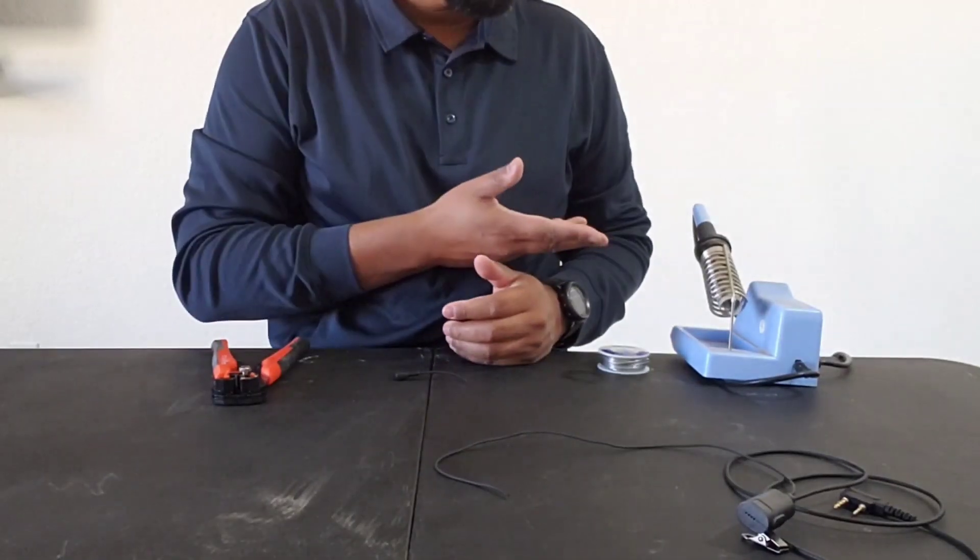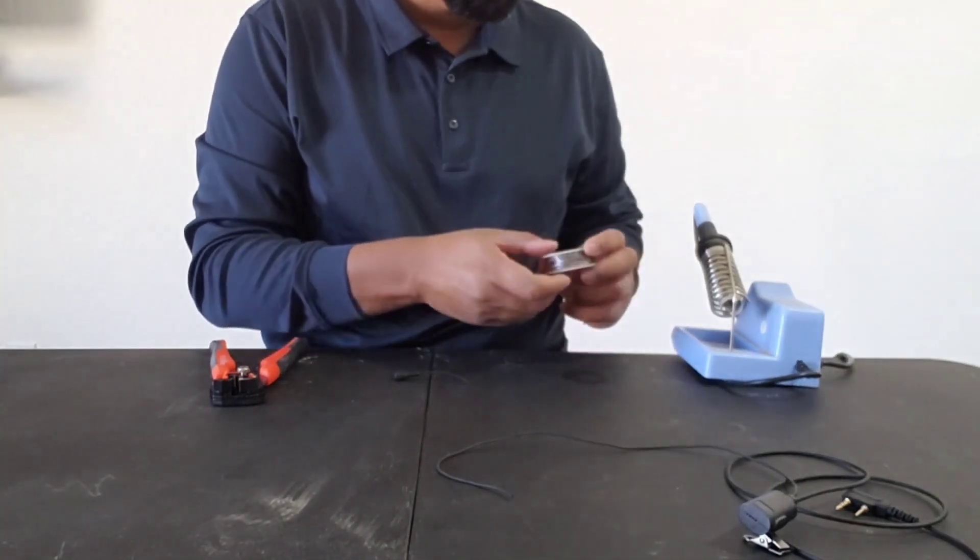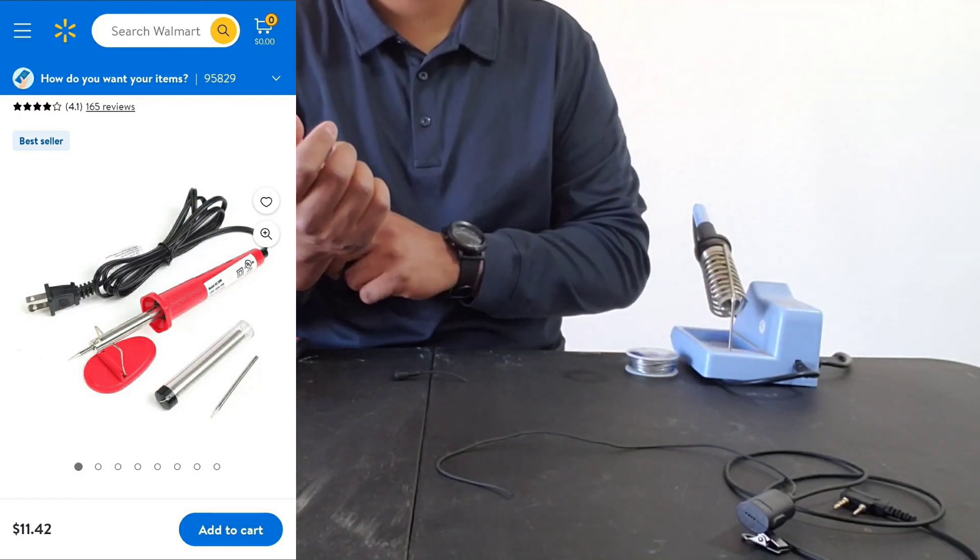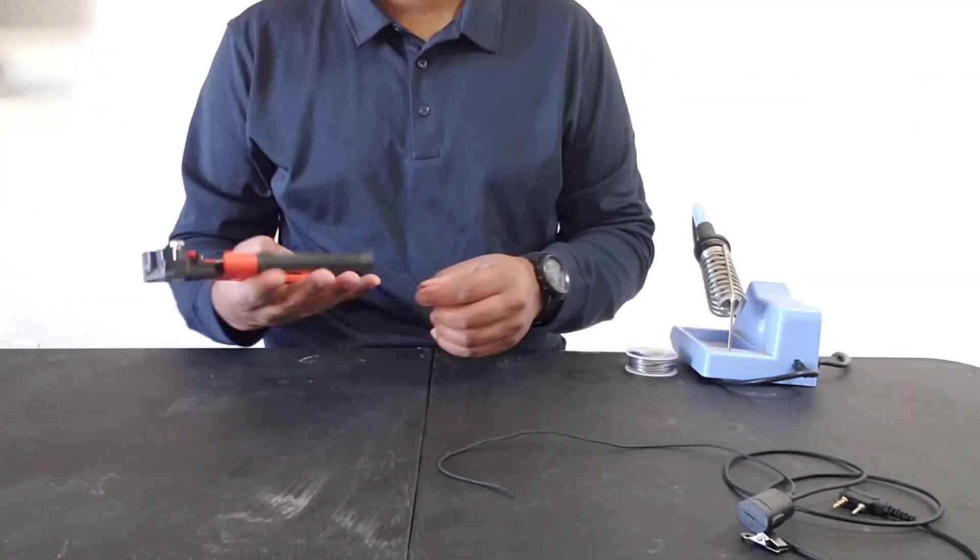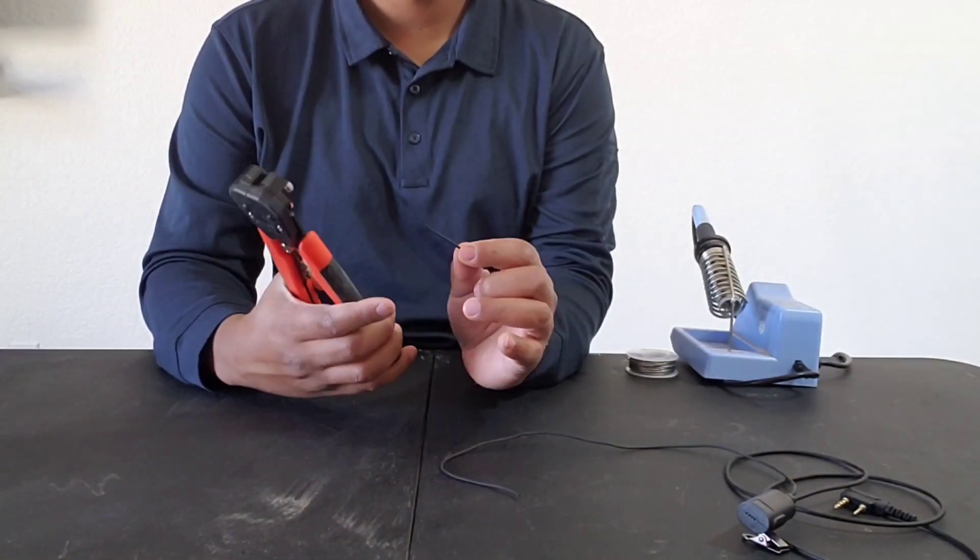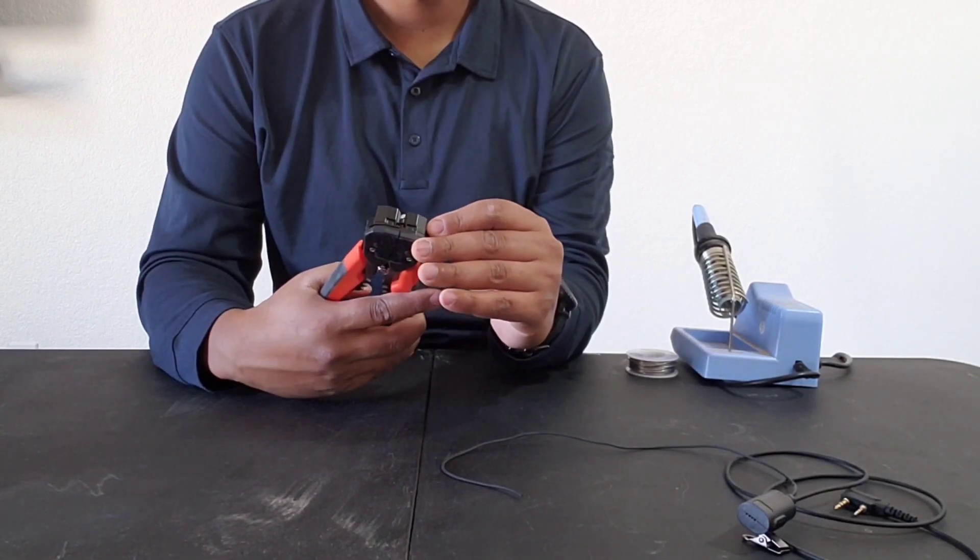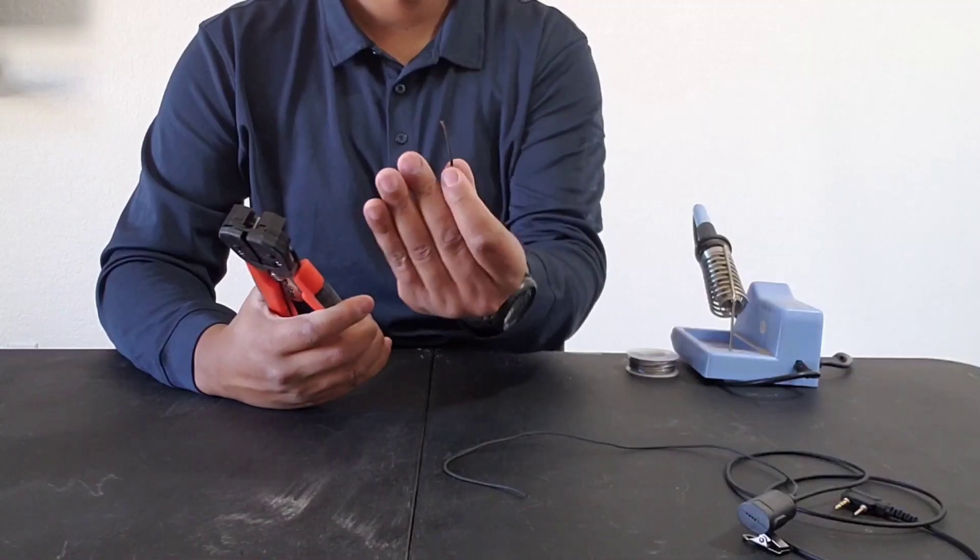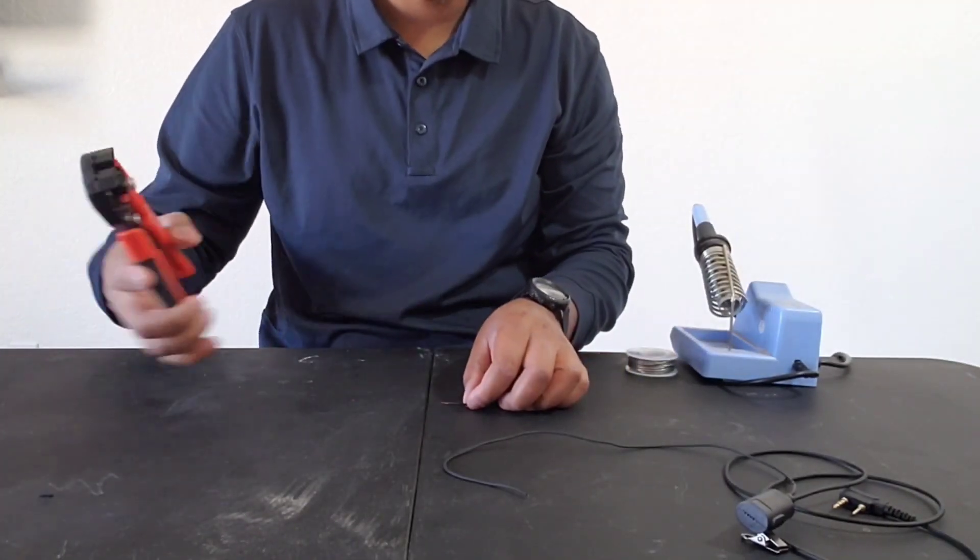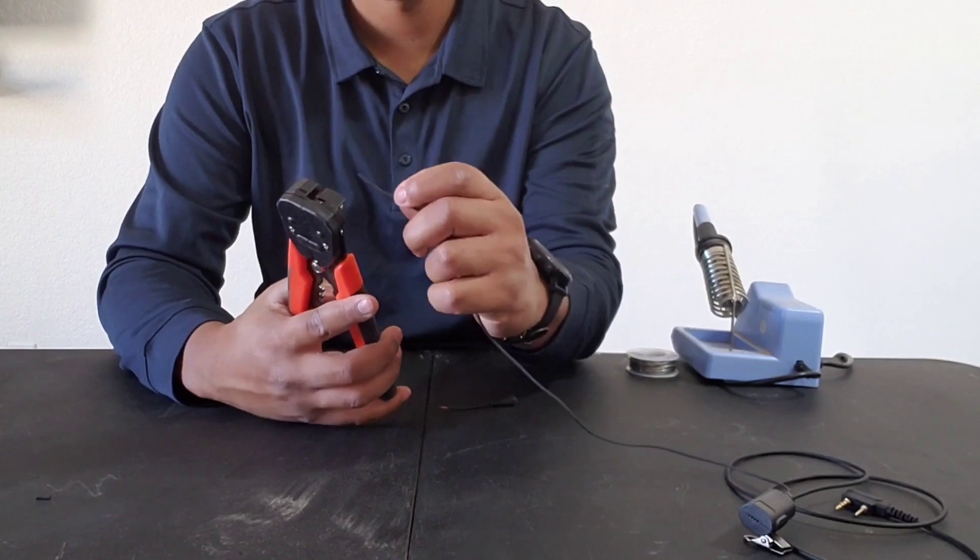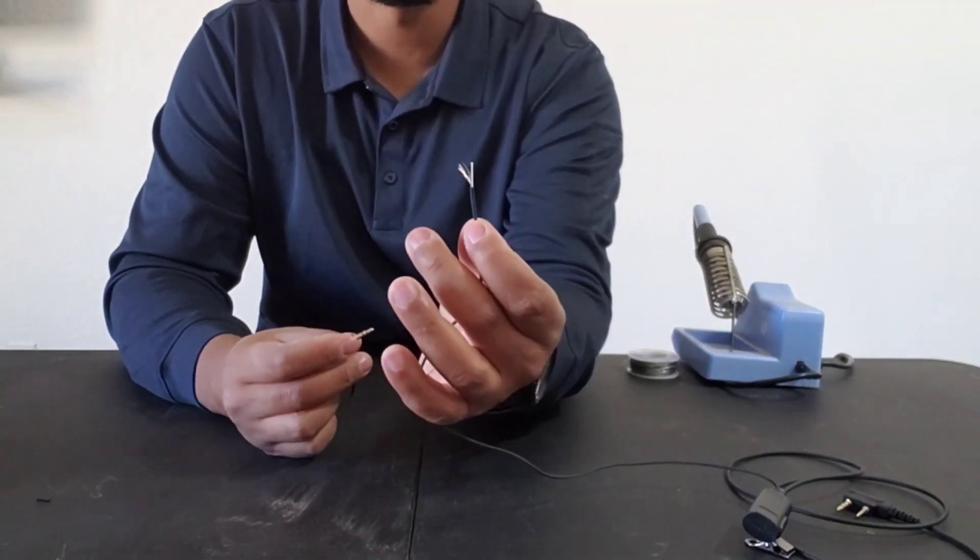All right. So I've got my soldering iron and my solder. This is a little bit more of a fancy one, but you can get the cheap one that you can find at Walmart or anywhere else. And the next thing you're going to do is strip the ends of the cable so that you can expose the wires. So now you can see the exposed cable at the end there.